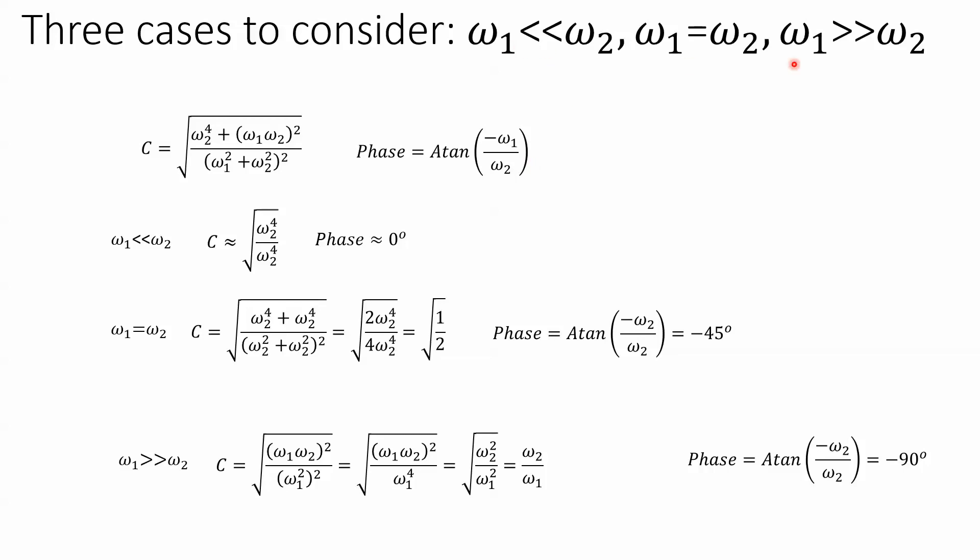Let's think about three cases. When the frequency of the sine wave is a lot less than the critical frequency. Well, that means ω₂ is a lot bigger than ω₁, and this collapses to just 1. And since this would be at a magnitude and phase plot, this would be the real part, and this is very close to zero, the phase becomes zero.